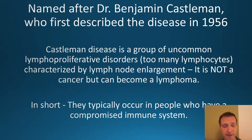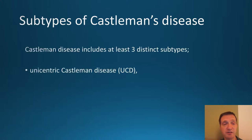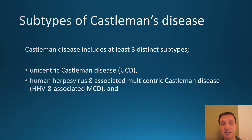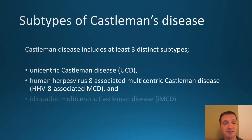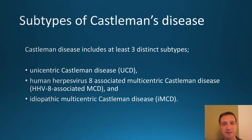Castleman's disease typically occurs in people with a compromised immune system, for example people who have HIV. It is split into three distinct types: unicentric Castleman's disease; HHV8-associated multicentric Castleman's disease — which, as an HIV doctor, is one of the main types; and idiopathic multicentric Castleman's disease. The idiopathic type can occur in people with what seems to be a functioning immune system. This discussion will concentrate on HHV8-associated multicentric Castleman's disease.